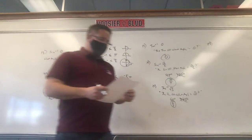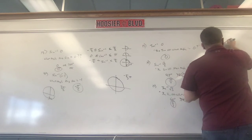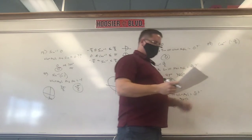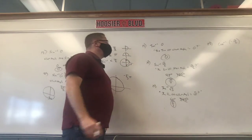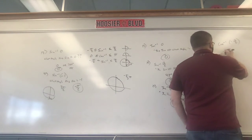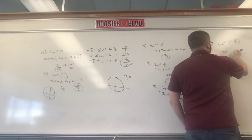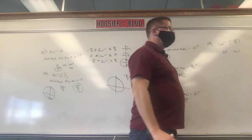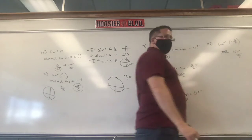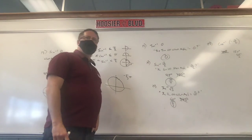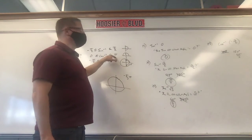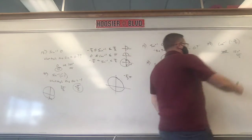Number 23: inverse cosine of negative radical 3 over 2. There are two spots where cosine equals negative radical 3 over 2: 210 degrees and 150 degrees. Which one do we keep? 210 is on the bottom, so we keep 150. That's 5 pi over 6. Is that okay? Yes — for cosine, it has to be between 0 and pi, and 5/6 is in that interval.